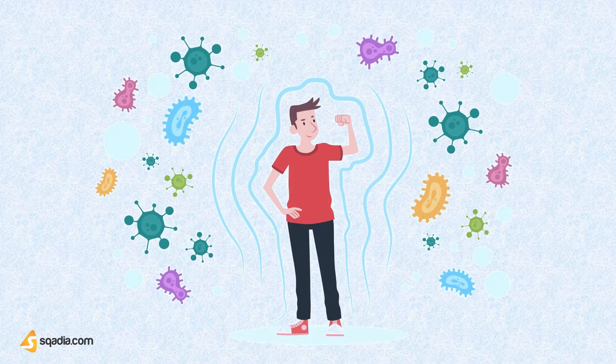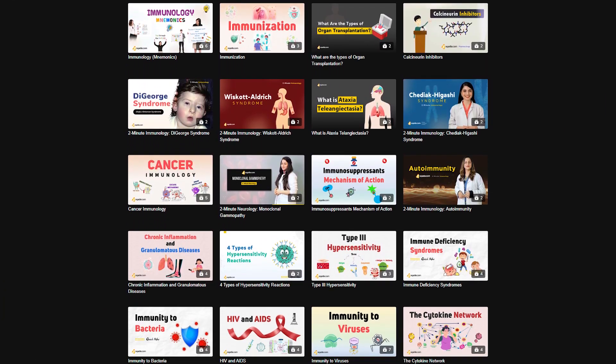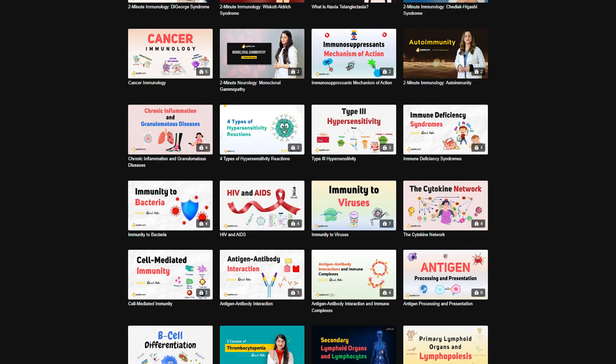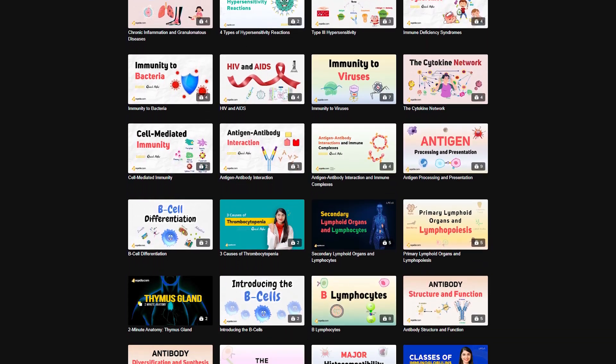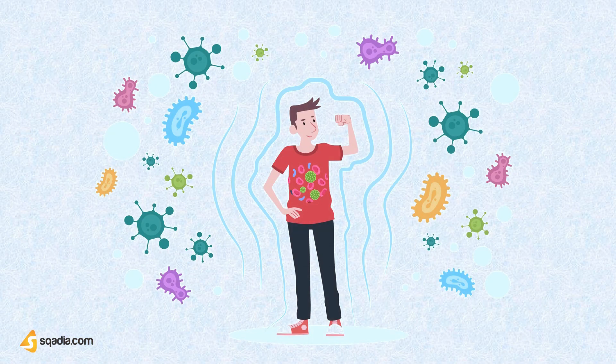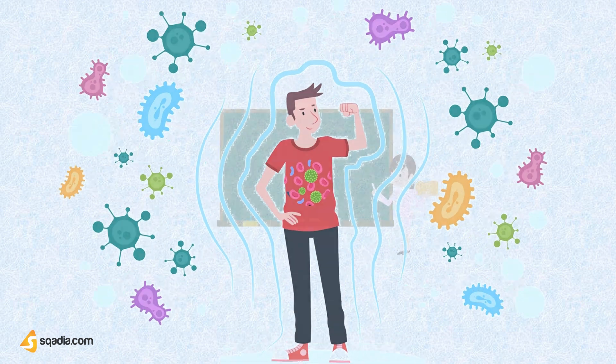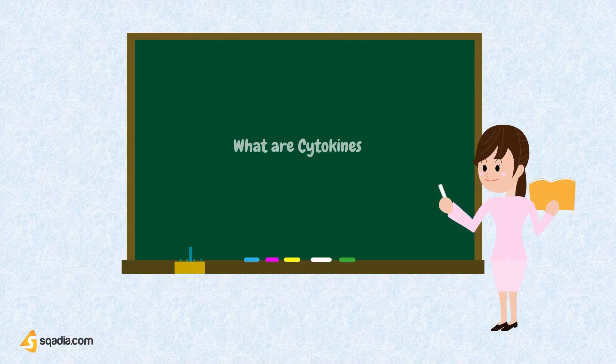The immune system of the human body is vast and comprises so many cells and elements. Even if it's a complex system, here at scotia.com we have covered several topics related to immunology. And in this lecture, we both will help you understand how the immune system is connected and how the cells of immunity communicate with each other.